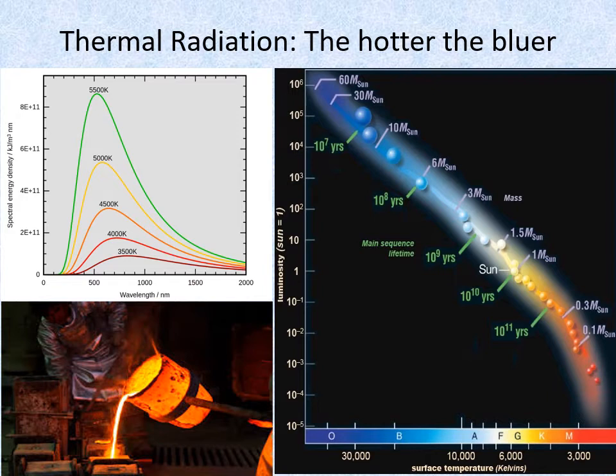This is seen, for example, in molten iron in a foundry, as in the image at the bottom left, but also in the colour of stars, as shown on the right. The more massive the star, the higher its temperature, the bluer its colour, and the shorter its life.